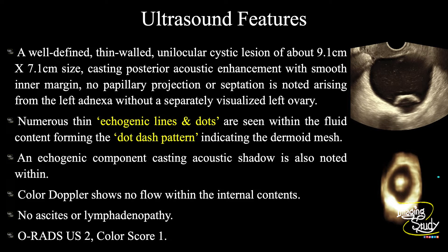In summary: a well-defined thin-walled unilocular cystic lesion of about 9 cm by 7 cm casting posterior acoustic enhancement, with smooth inner margin, no papillary projection or septation, arising from the left adnexa without a separately visualized left ovary. Numerous thin echogenic lines and dots forming the dot-dash pattern indicate the dermoid mesh. An echogenic component casting acoustic shadow — probably a molar tooth — is also noted. Color Doppler shows no internal flow and no prominent peripheral flow. No ascites or lymphadenopathy. Conclusion: left adnexal dermoid cyst with O-RADS score 2 and color score 1.